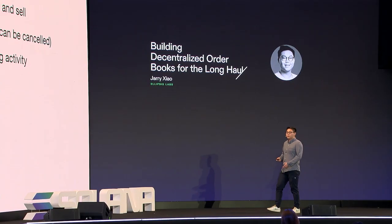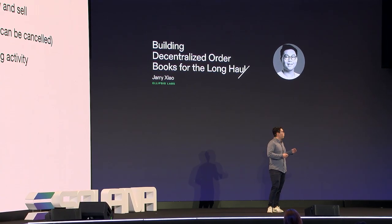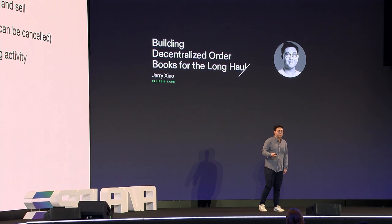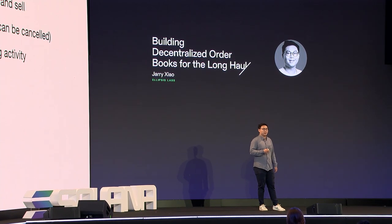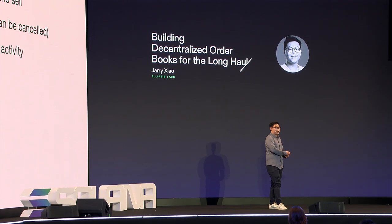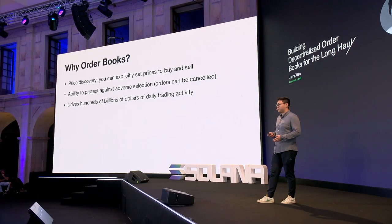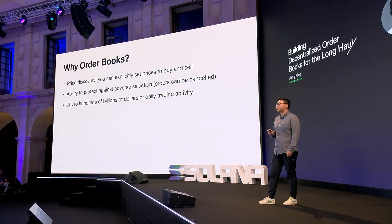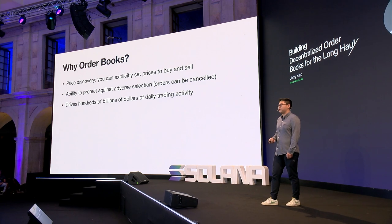Order books also enable some protection against adverse selection, which is always present in any market. Order books are good because they allow you to cancel orders in the case that you're about to be adversely selected against. Suppose the taker knew that the price of an offer was way lower than it needed to be — if the person who posted the offer also knew this, they can remove it from the book and avoid being traded against. These two mechanisms allow order books to drive hundreds of billions of dollars of daily trading activity in traditional finance.